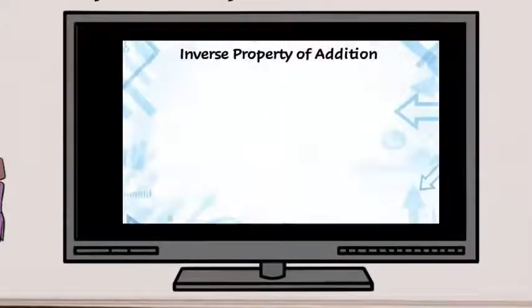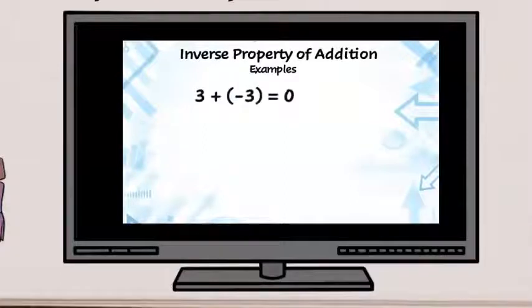Let's look at some examples of the inverse property. Inverse is another name for opposite. For example, 3 and negative 3 are opposites. So 3 plus negative 3 equals zero.